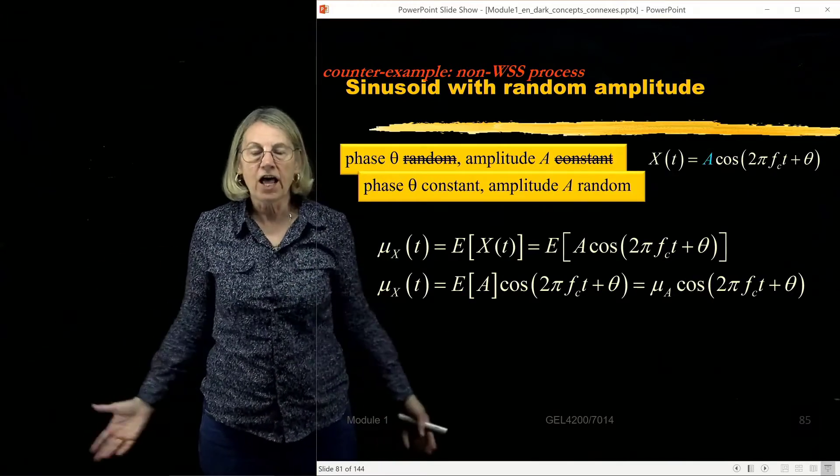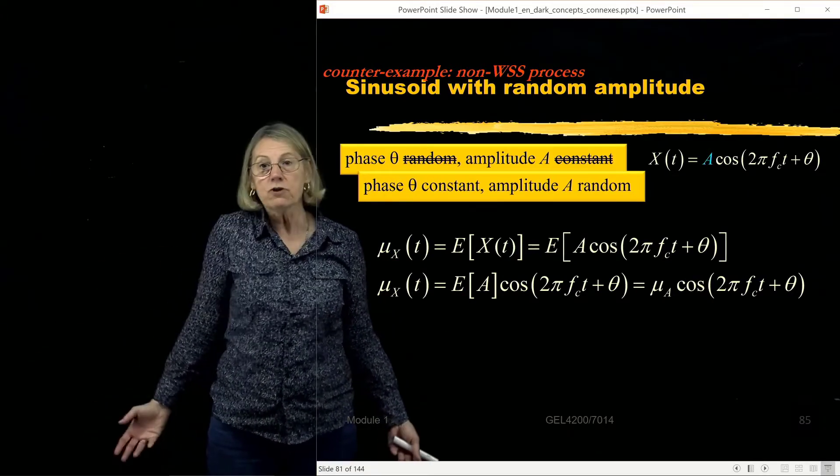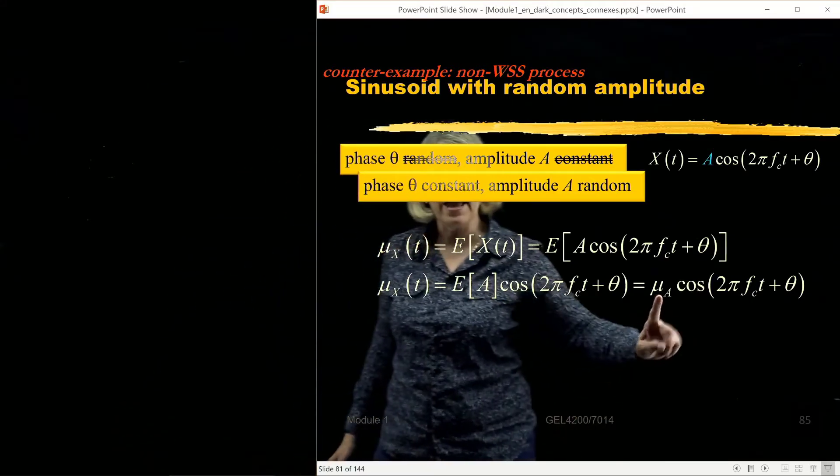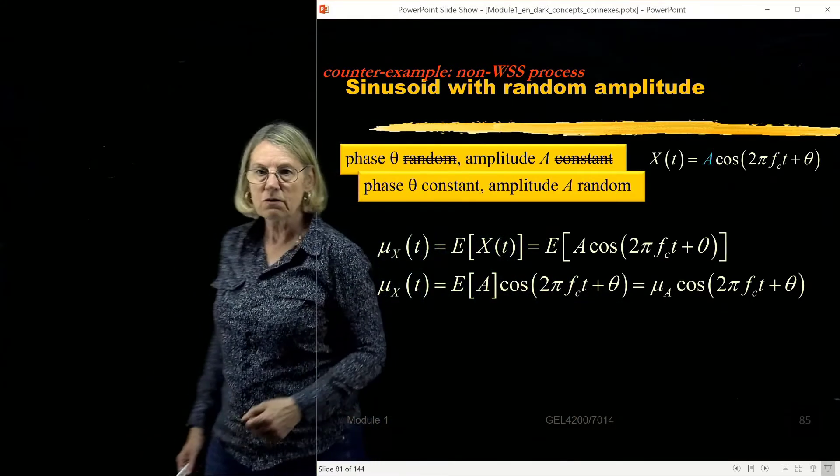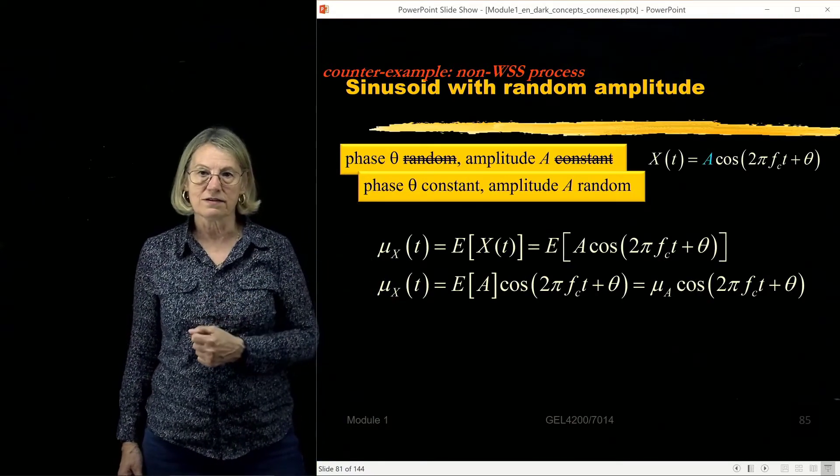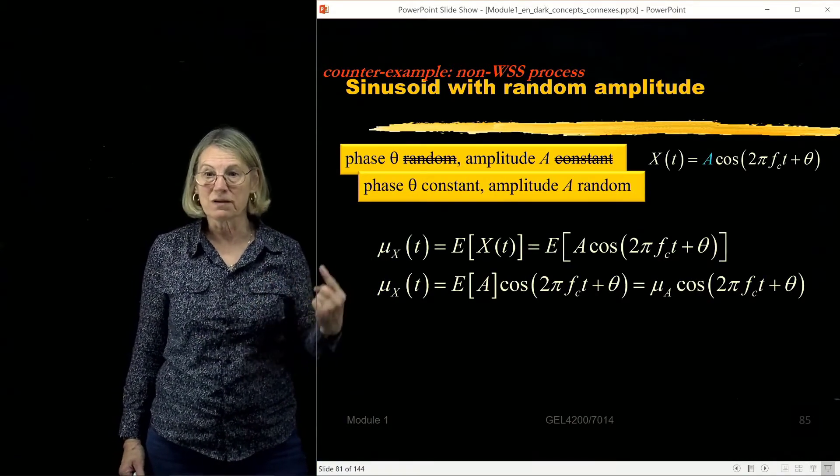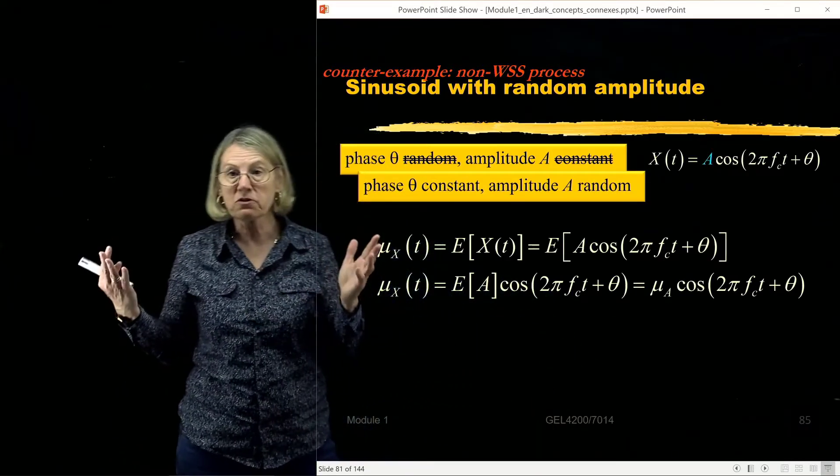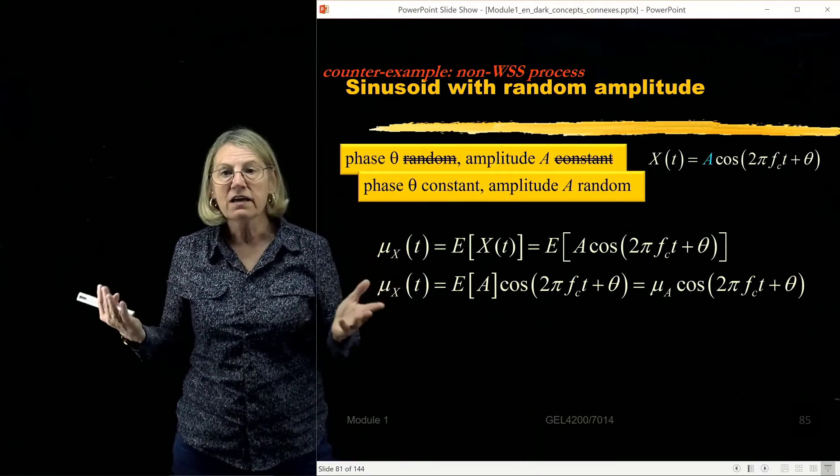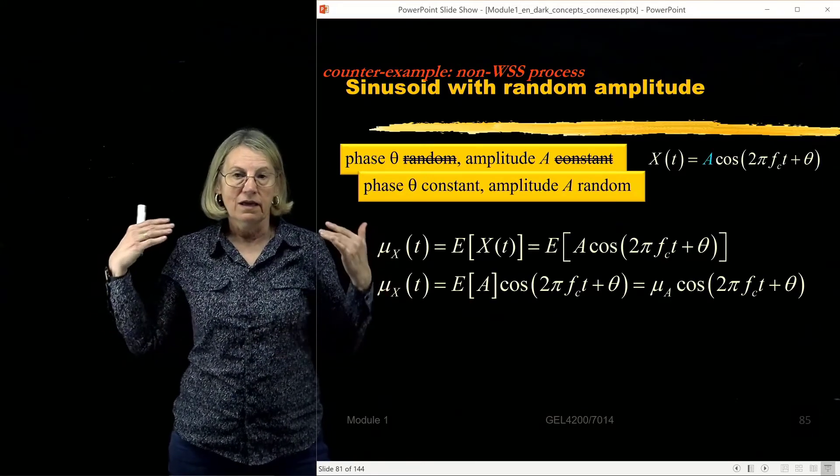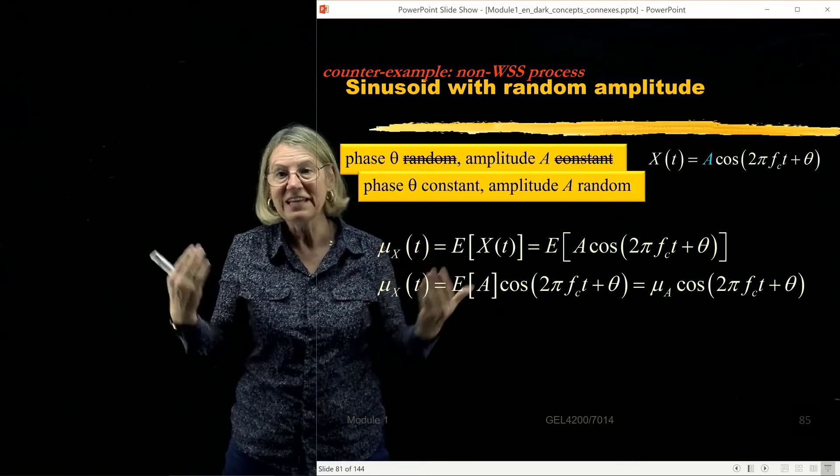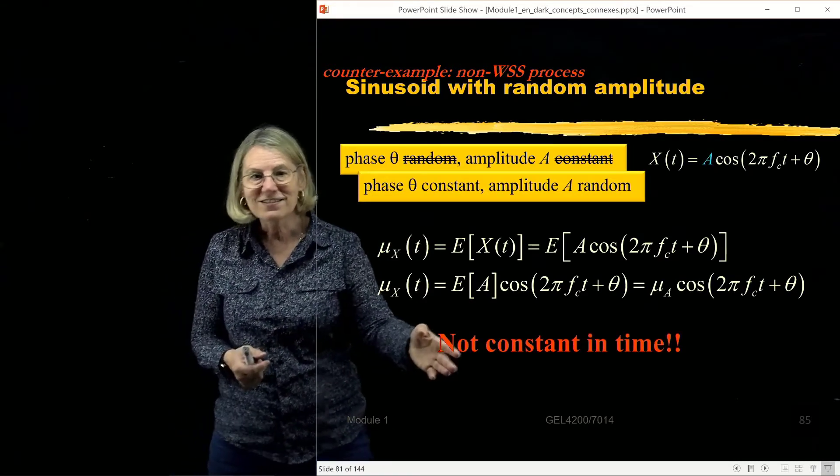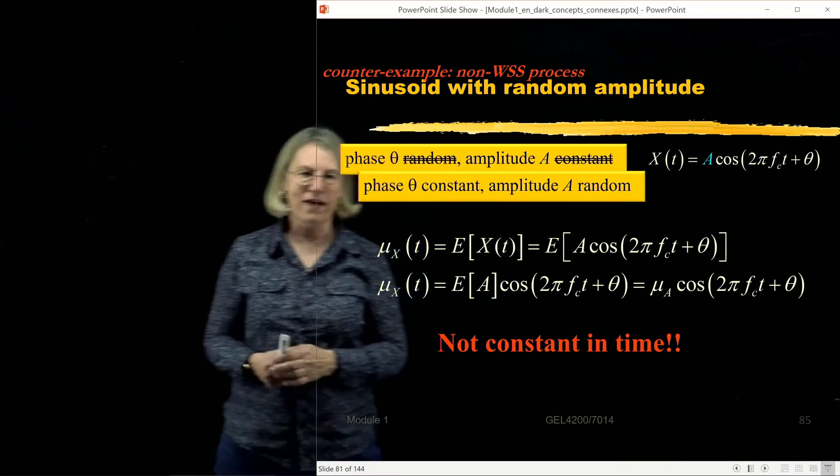Now I'm not even going to tell you what the distribution of A is, but I do know that it's going to have a mean. So whatever the mean is, it's going to be that mean of A times a cosine. So is this constant? Well, I can think of one case where it's going to be constant, and that's when that mean is zero. So it's possible. Suppose that A happens to have a pdf which is zero mean. So it's not constant in time unless that μ of A is zero.